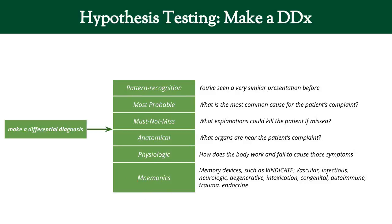The last method is mnemonics. It's probably used fairly often, though maybe not the best way. These are memory devices — for example, VINDICATE, which stands for Vascular, Infectious, Neurologic, Degenerative, Intoxication, Congenital, Autoimmune, Trauma, and Endocrine. It spells VINDICATE and reminds you to look for each of those categories.